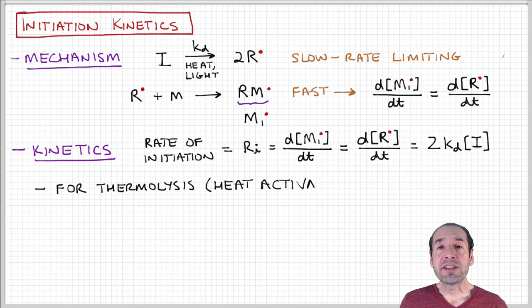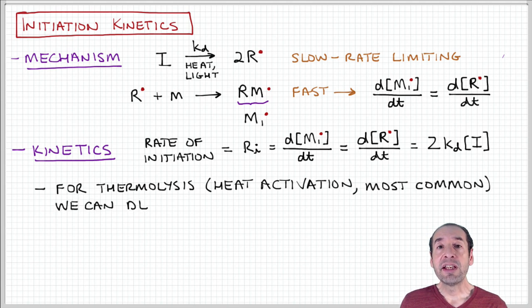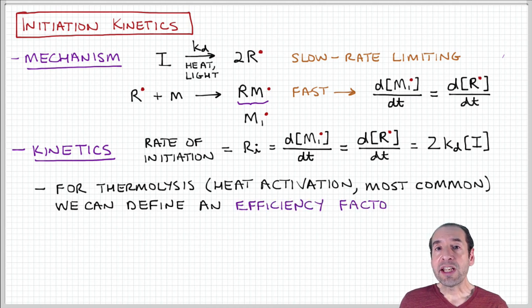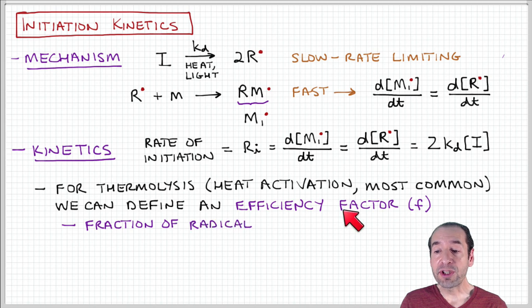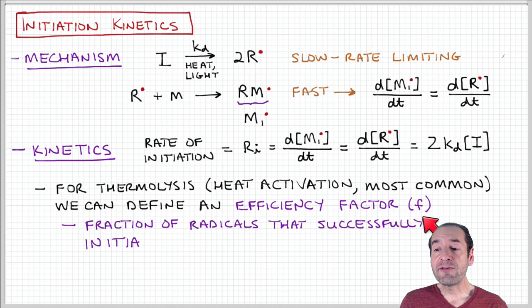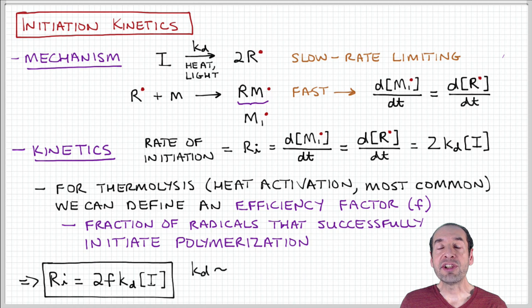If we talk about thermolysis, which is probably the most common type of initiation that you might encounter, by convention, we typically also add an additional parameter called the efficiency factor denoted by lowercase f. This efficiency factor represents the fraction of the radicals that are produced that actually go on to successfully initiate polymerization.